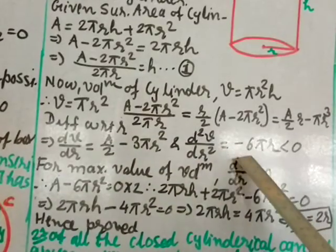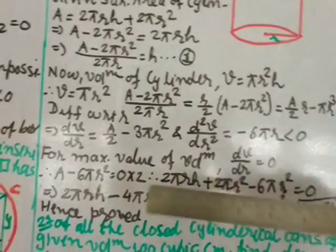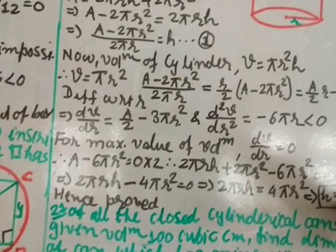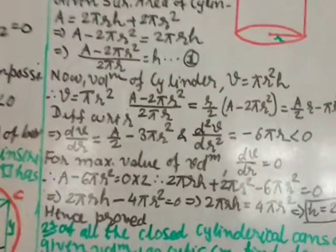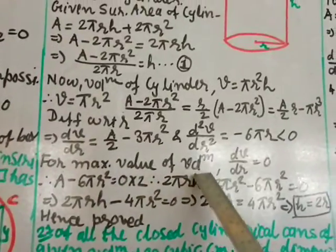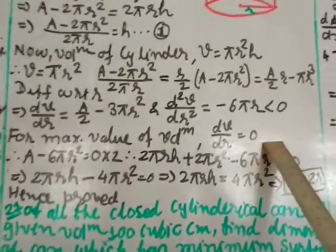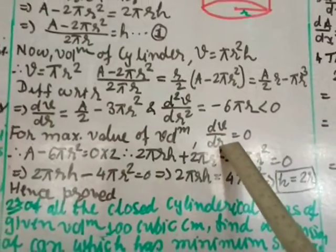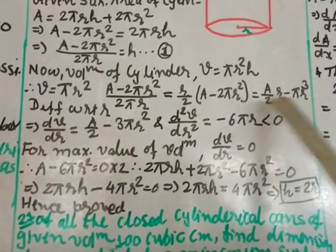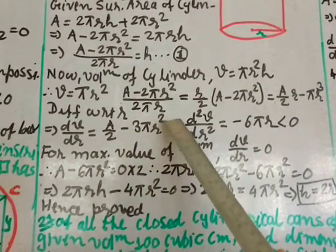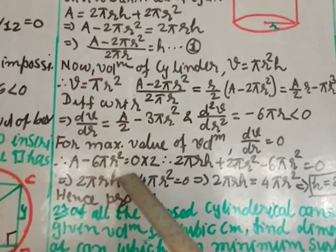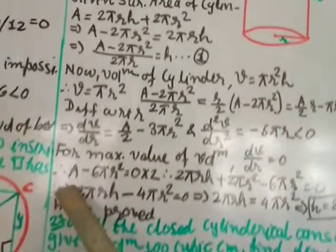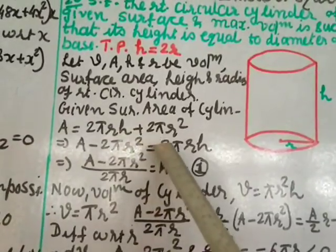The second derivative d²V/dr² = minus 6πr, which is negative, confirming maximum. For maximum volume, set dV/dr = 0: A/2 minus 3πr squared = 0. Substituting the value of A = 2πrh + 2πr squared back: (2πrh + 2πr squared)/2 minus 3πr squared = 0, which simplifies to πrh minus 2πr squared = 0, giving πrh = 2πr squared.